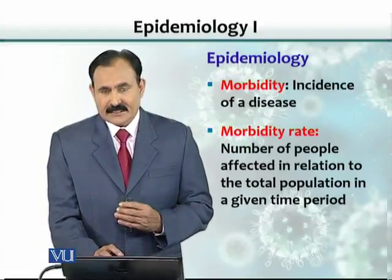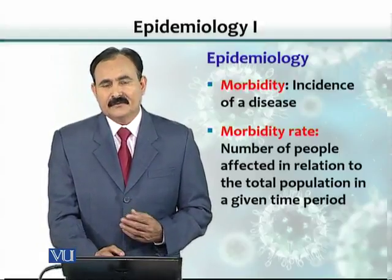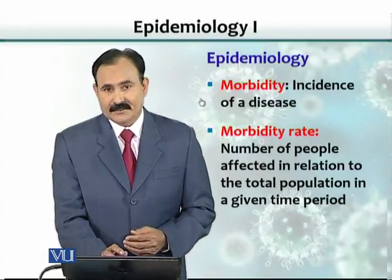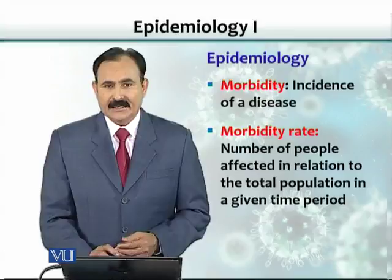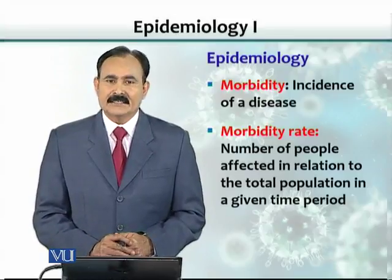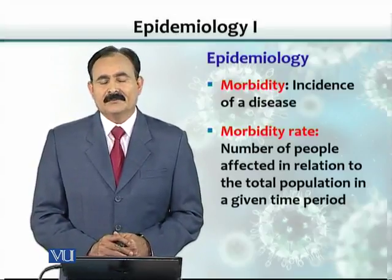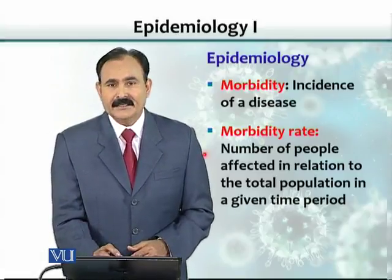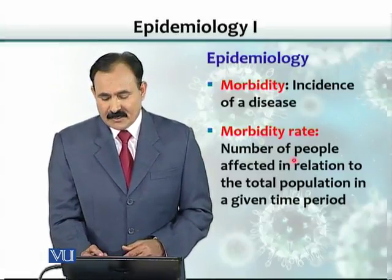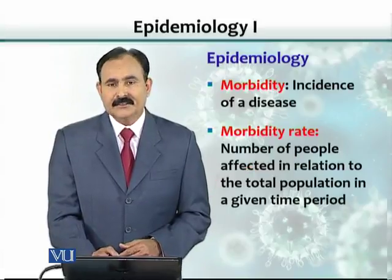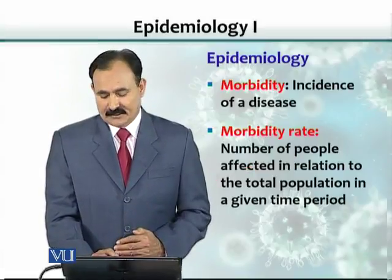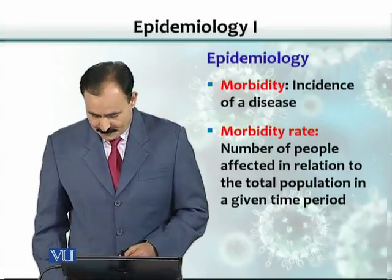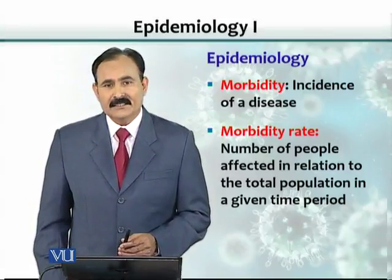Let's examine a few definitions encountered in epidemiology. One is morbidity, which is basically the incidence of a disease — when we get sick, we become morbid. The morbidity rate is the number of people affected in relation to the total population in a given time period.